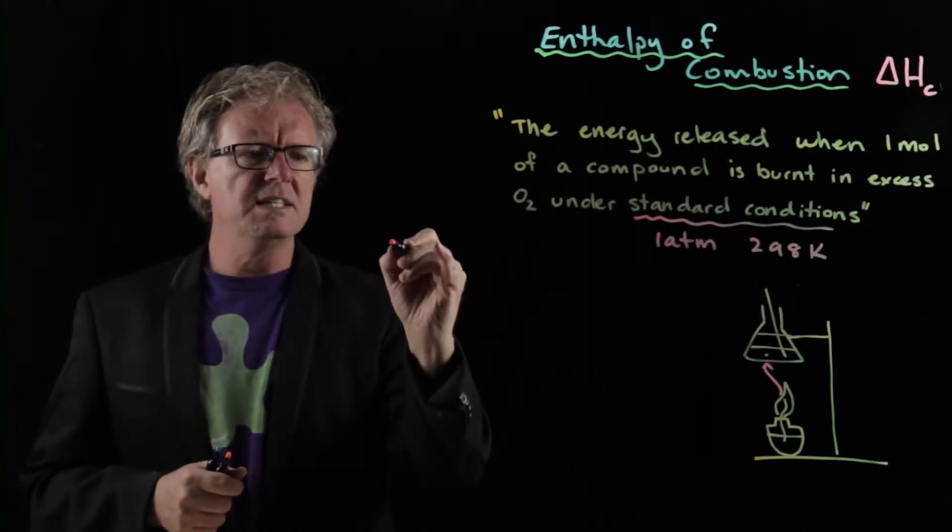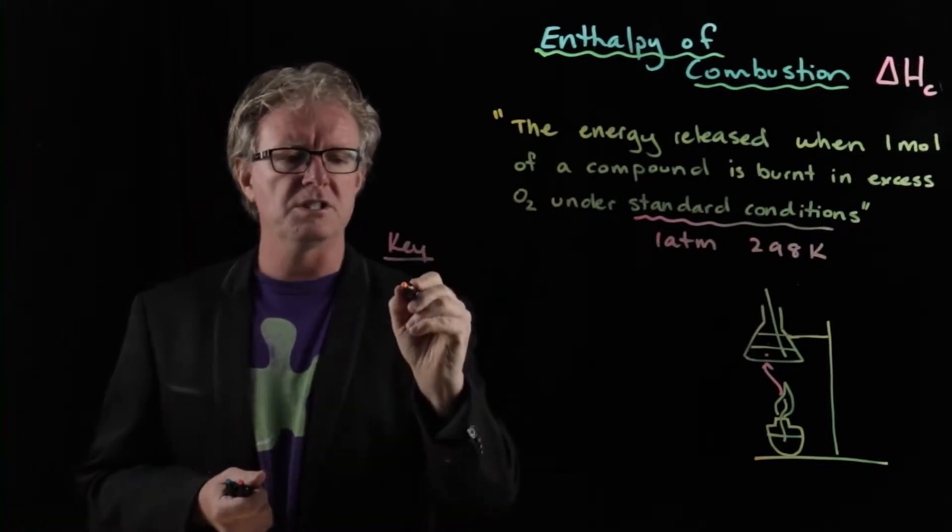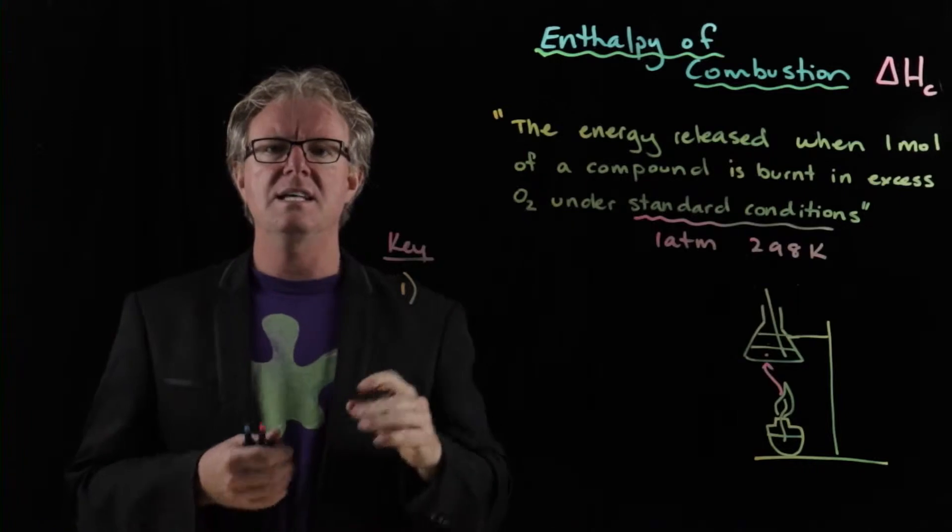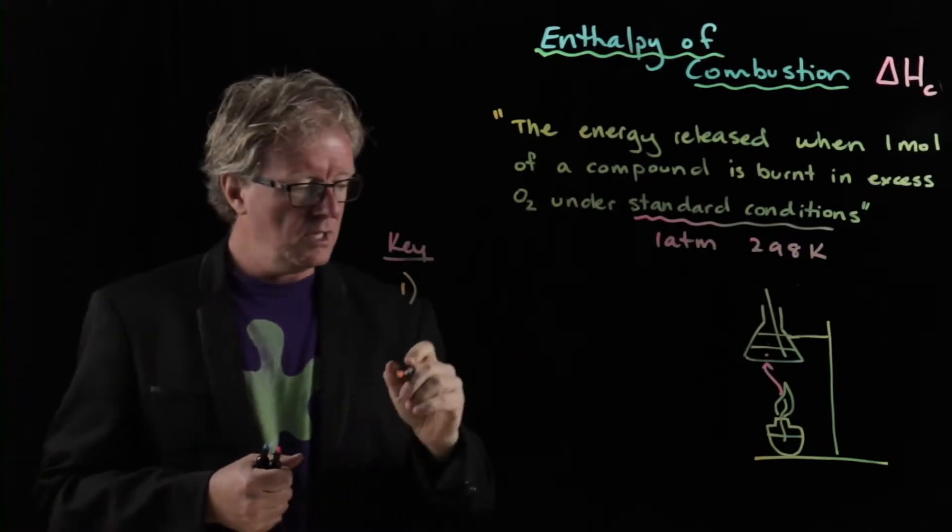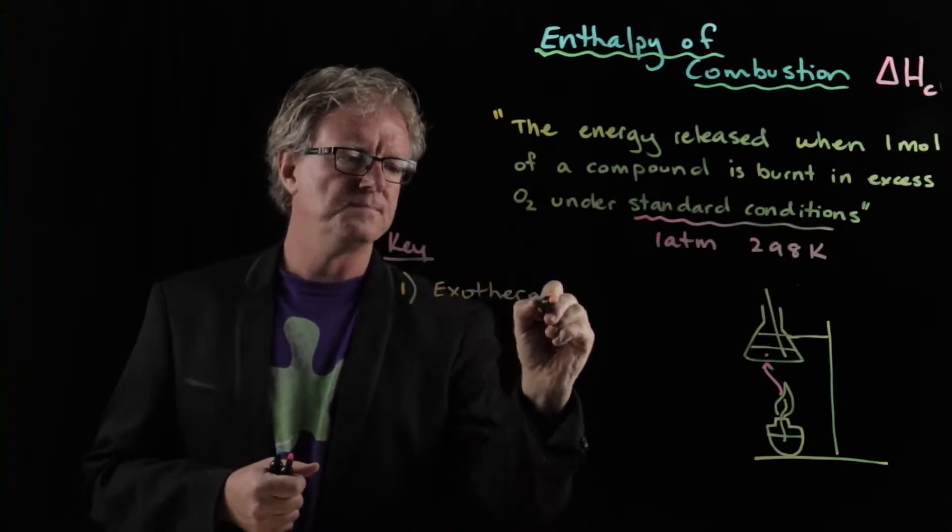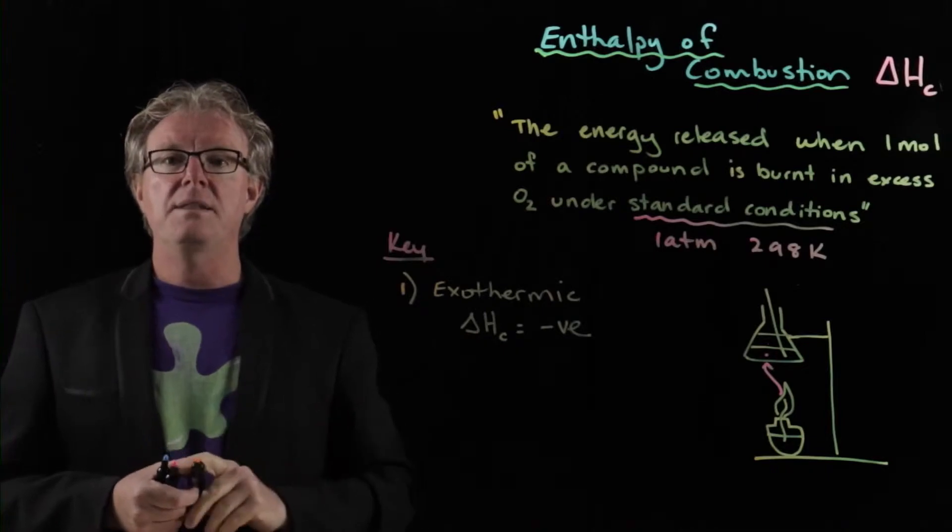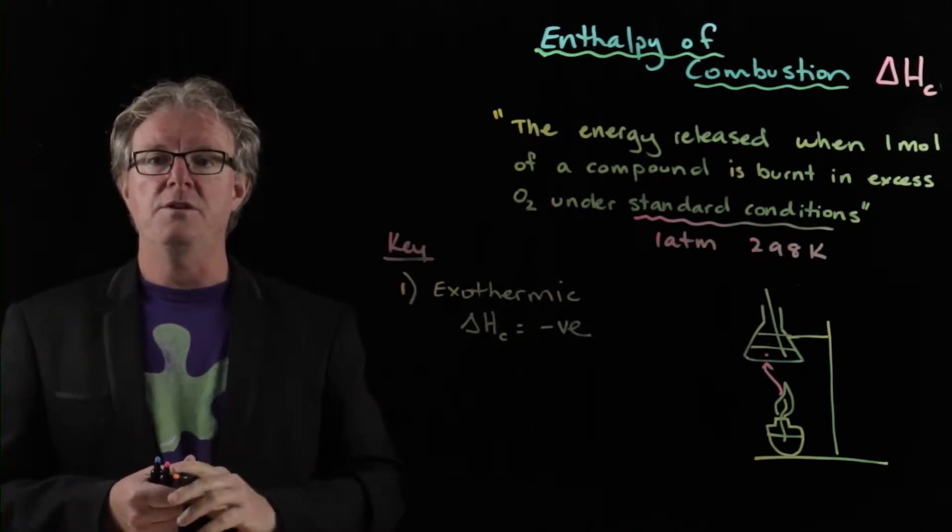So the key ideas here for the enthalpy of combustion: number one is that combustion is an exothermic process. And so therefore, being exothermic, the delta enthalpy change is negative in value.